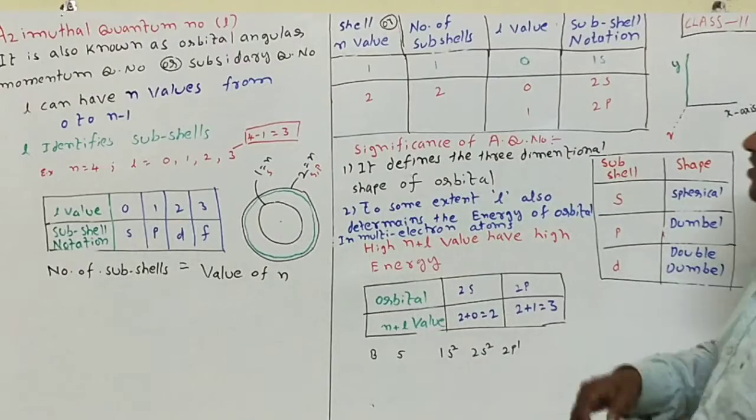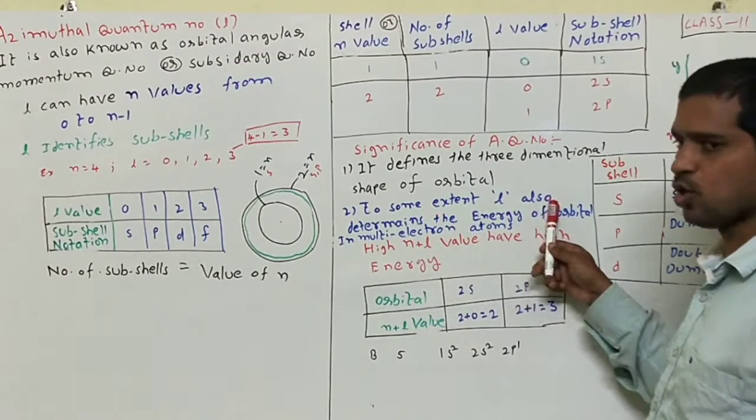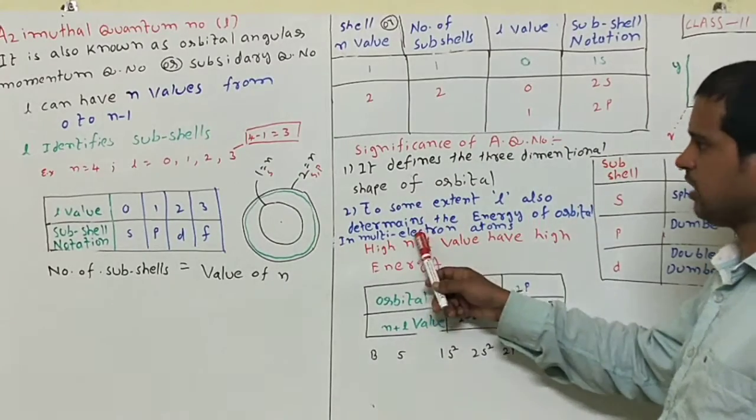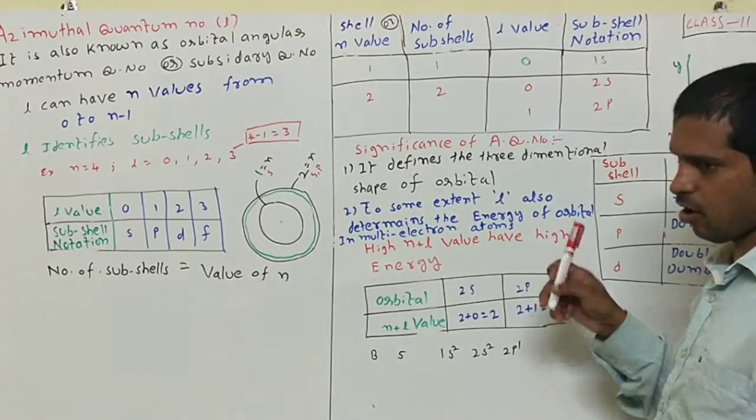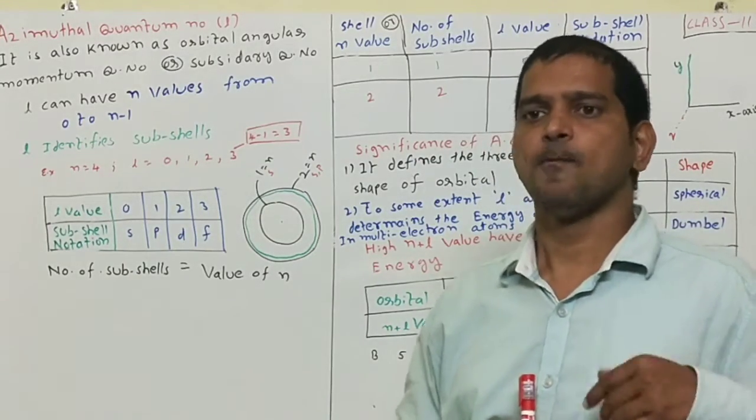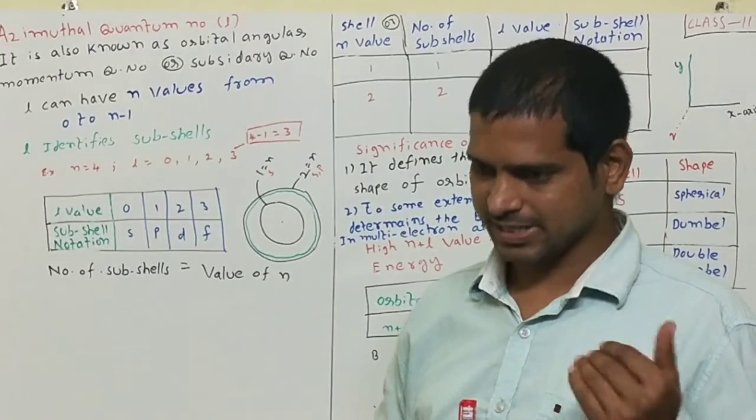And second significance is, to some extent, L also determines the energy of orbital in multi-electron atom. Multi-electron atom means atoms having more than one electron.